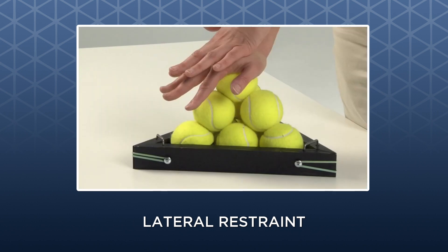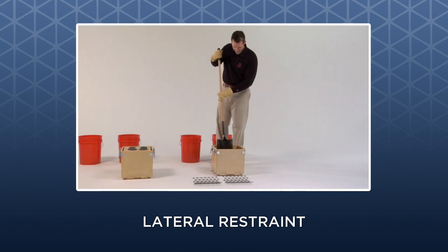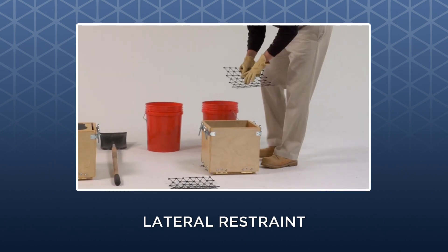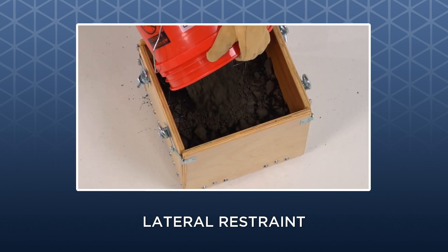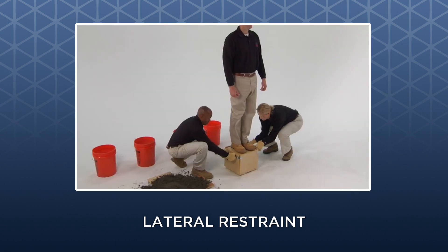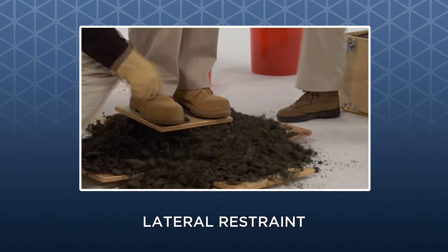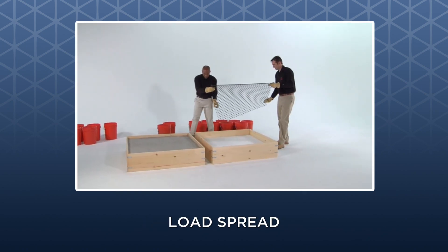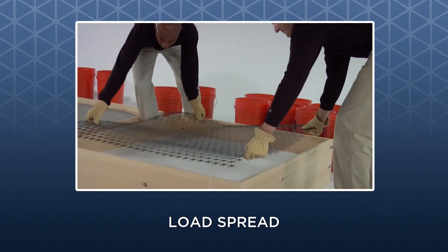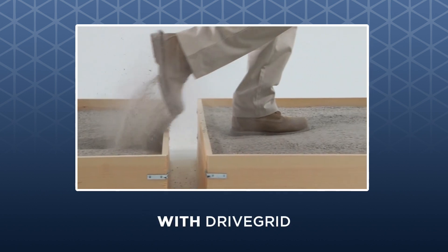Notice how the stack of balls constrained in the rigid triangular restraint does not collapse under pressure. In another demonstration, when three layers of Unilock Drive Grid are placed in a box of gravel, a person can remain standing on the stack of base material even when the sides of the box are removed. In the absence of Drive Grid, the gravel simply collapses. A final demonstration shows how a foam rubber pad covered with soft sand becomes significantly more rigid when a layer of Drive Grid is placed between the sand and the foam.